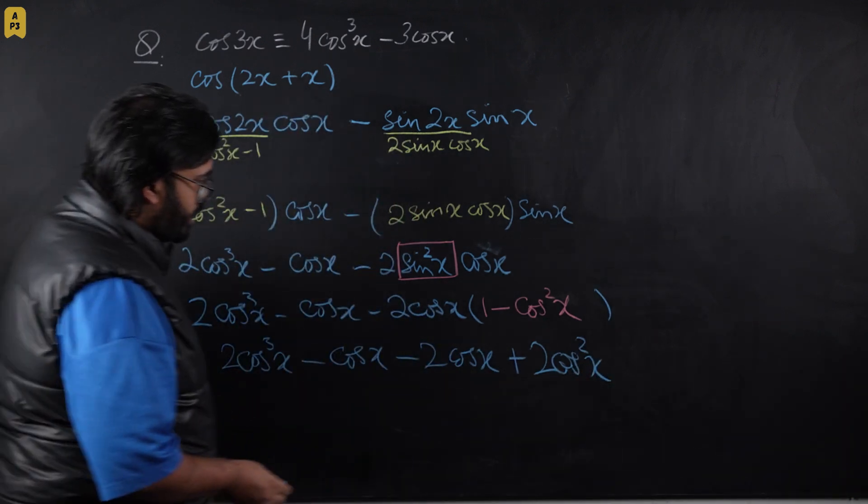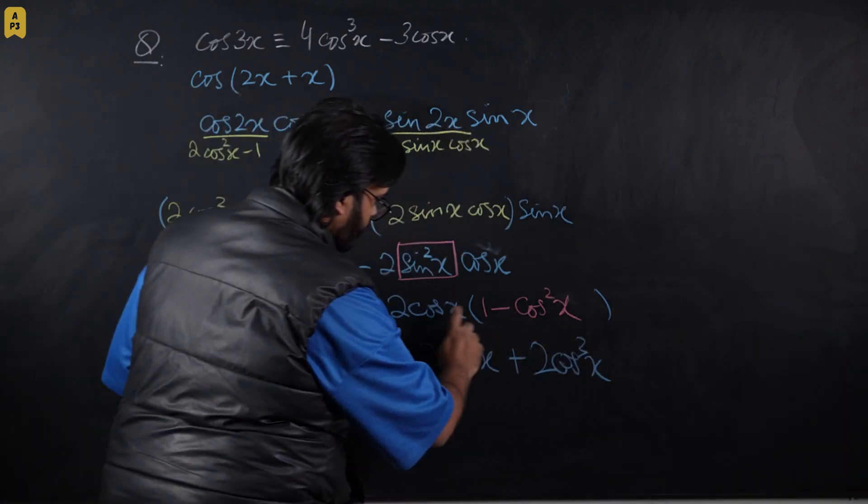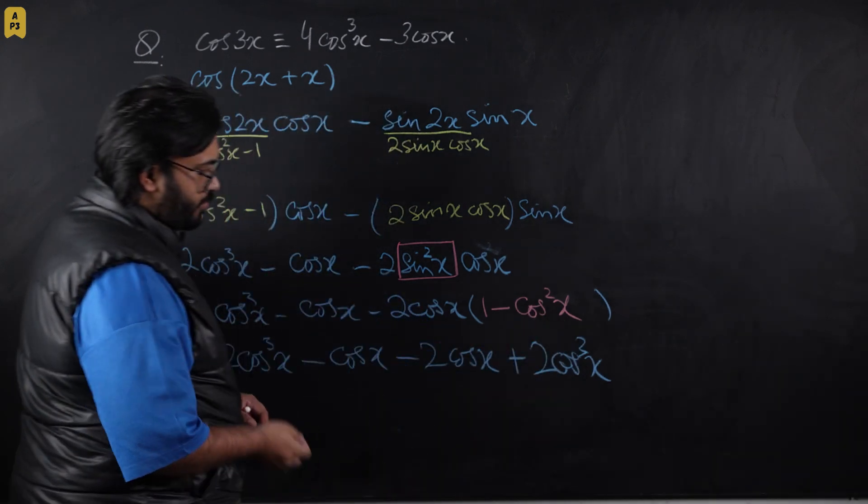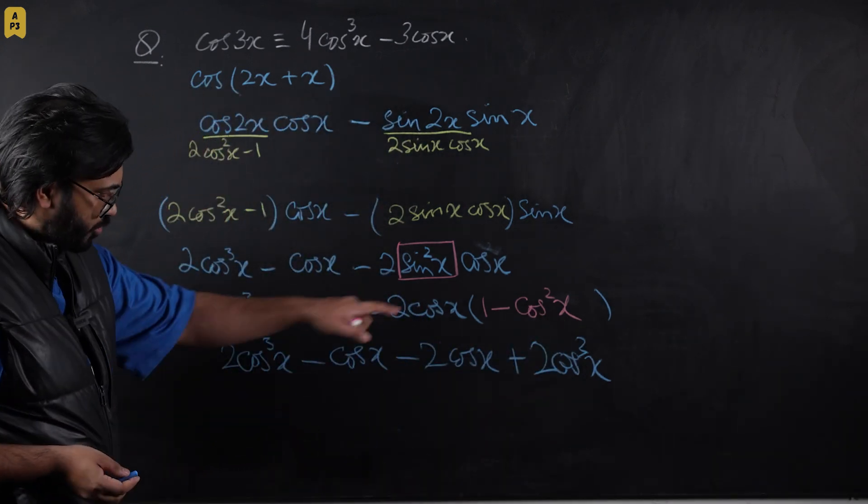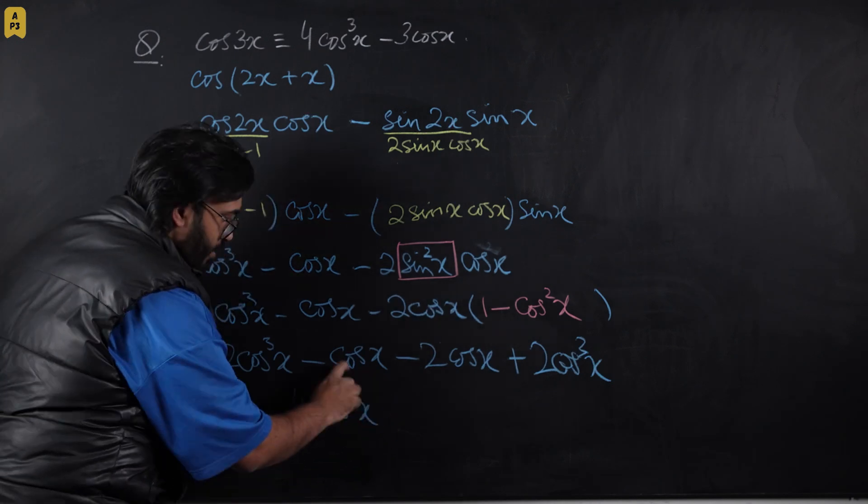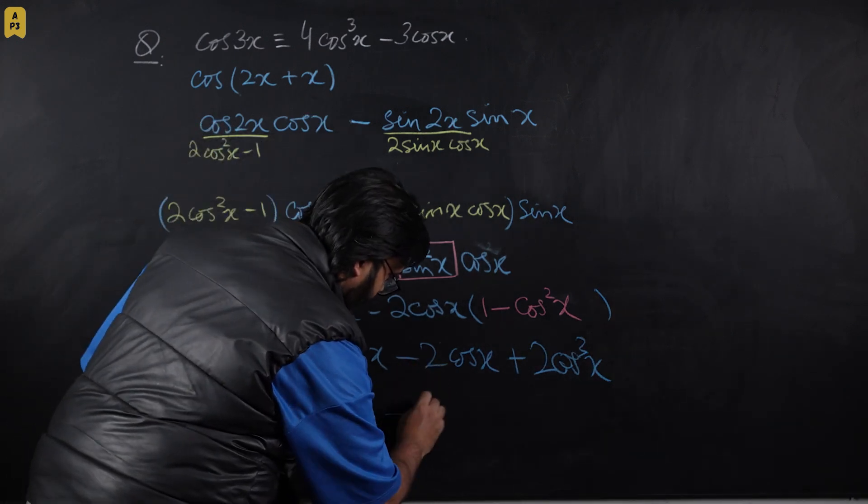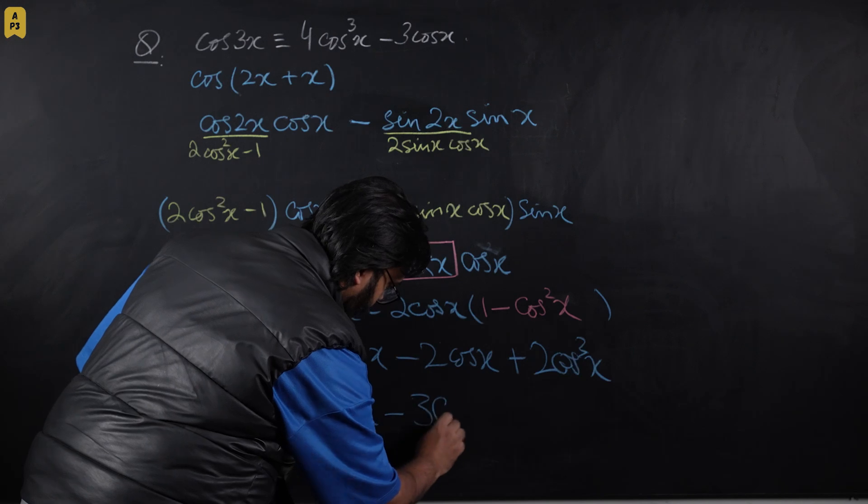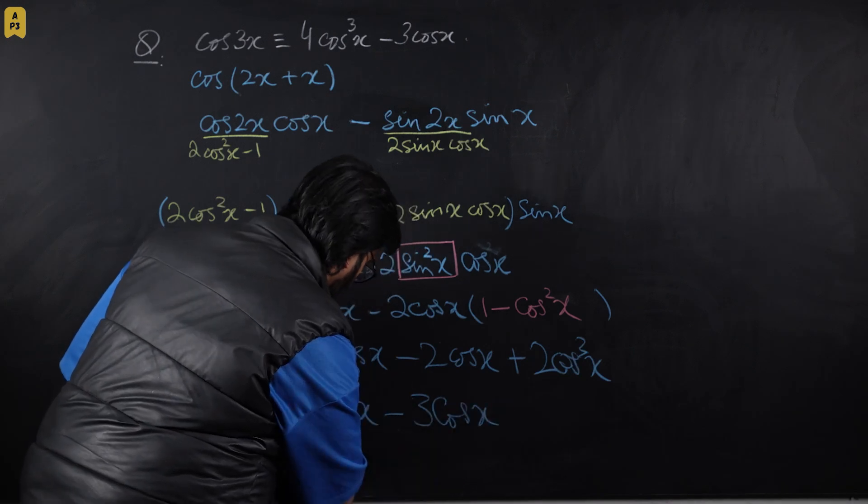2cos³x + 2cos³x gives us 4cos³x, and -cos x - 2cos x gives you -3cos x. This is what we had to prove.